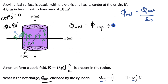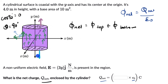So the net flux is simply the flux through the top surface plus the flux through the bottom surface. The area vector for the top surface points outward in the +ĵ direction, and the area vector for the bottom surface points outward in the -ĵ direction.